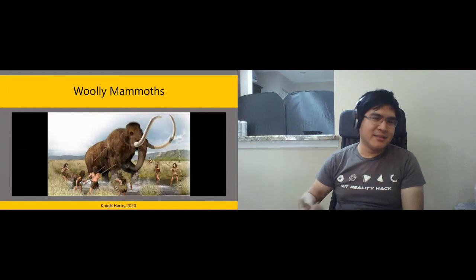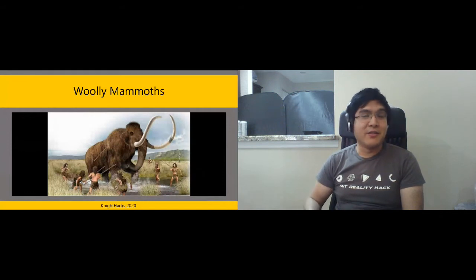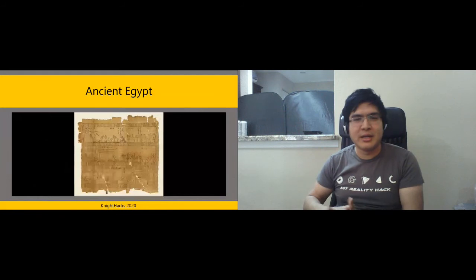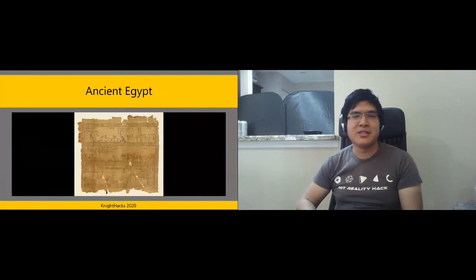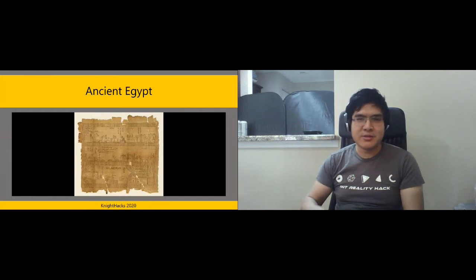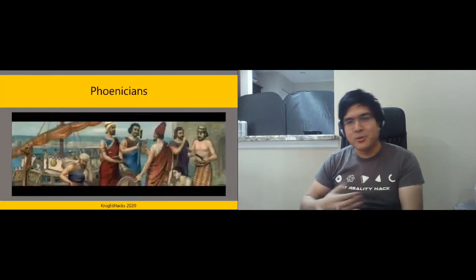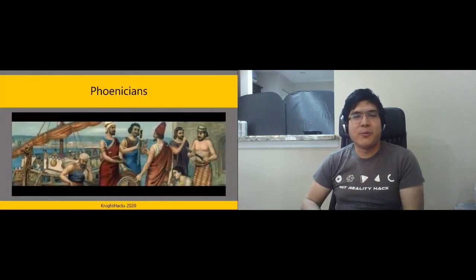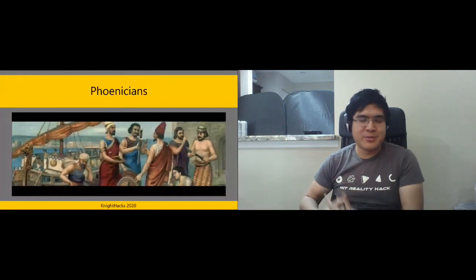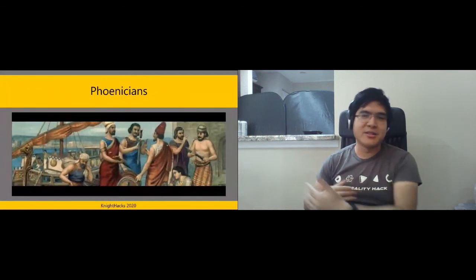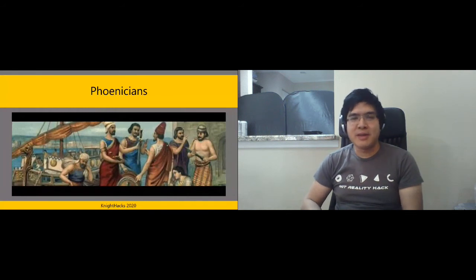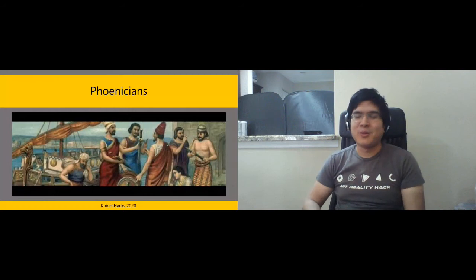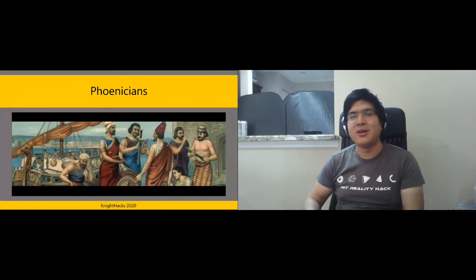If we skip ahead to ancient Egypt, they develop papyrus — kind of like paper — which allows us to record information in a fairly portable format. This is where the dawn of great civilization begins with more information. We jump ahead to the Phoenicians: everyone has their own writing system, but other nations can't understand other nations' writing systems. The Phoenicians, who trade with everyone, have a great idea: why not make a common alphabet for everyone? They had an incentive because they do trade.